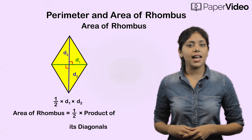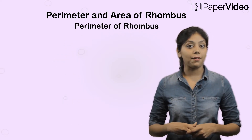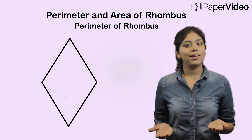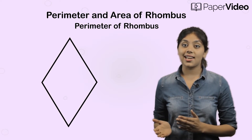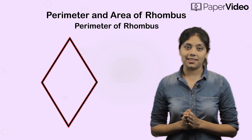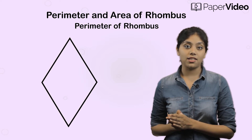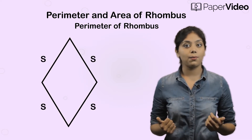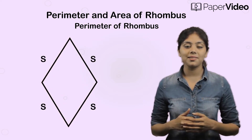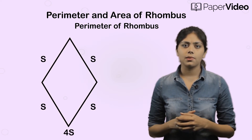Now suppose I ask you to find the perimeter of the rhombus — how will you calculate it? We know that just like a square, all sides of a rhombus are equal in length. So if we denote the side of a rhombus as s, then the perimeter of the rhombus will be 4s.